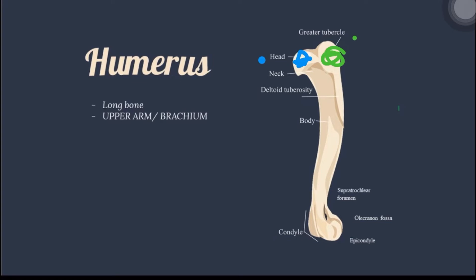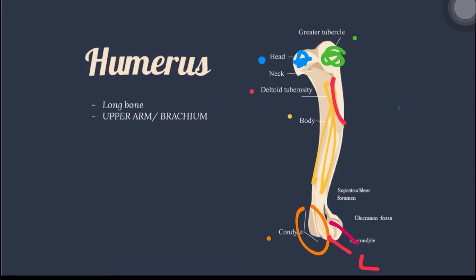If we flip the bone, you can see the lesser tubercle, which is the process medial to the head. Next is the body or shaft, which is a cylindrical part connecting the epiphyses. The deltoid tuberosity is a large tuberosity on the lateral side of the humerus. The entire distal extremity is the humeral condyle. The lateral epicondyle gives rise to the extensors of the forearm, while the medial condyle is for the attachment of flexors of the forearm.